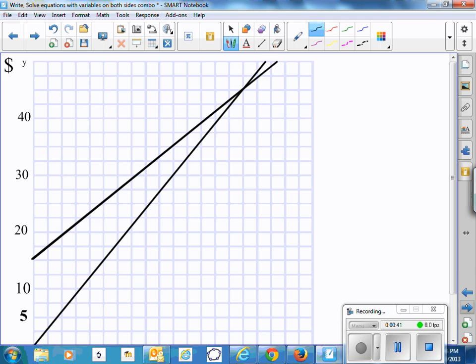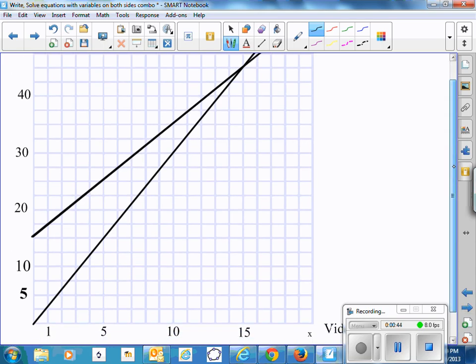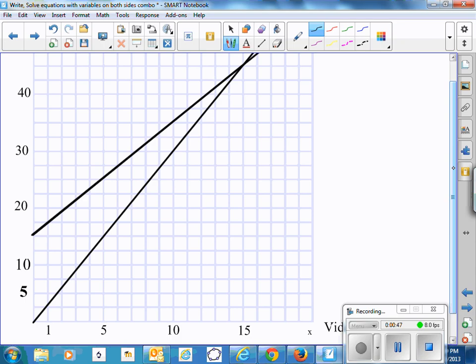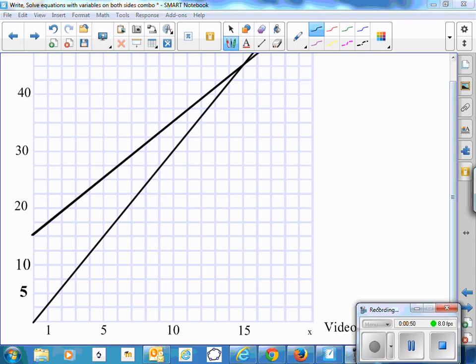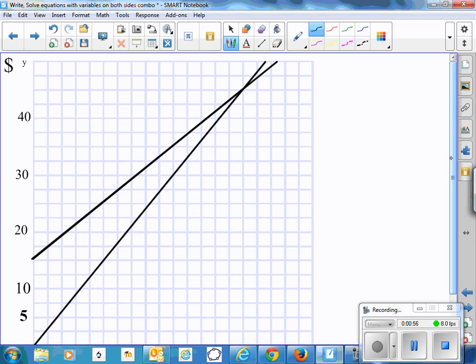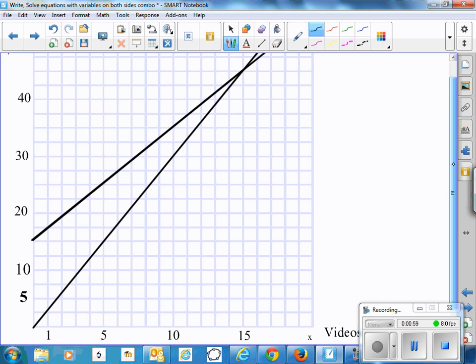If I graph those two situations, I might come up with a graph like this, showing the number of videos versus the money cost. And in one case, I start out with a price of $15 and go up by $2 for every video I rent. In the other case, I start out with no cost if I rent no videos, and $3 for each video that I rent.